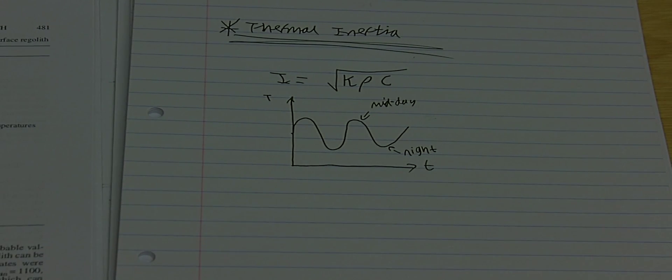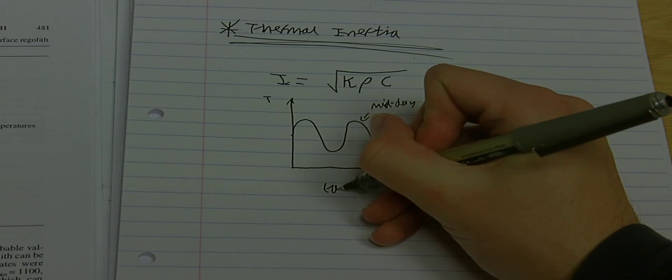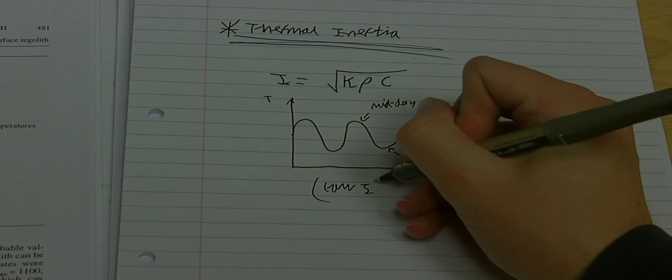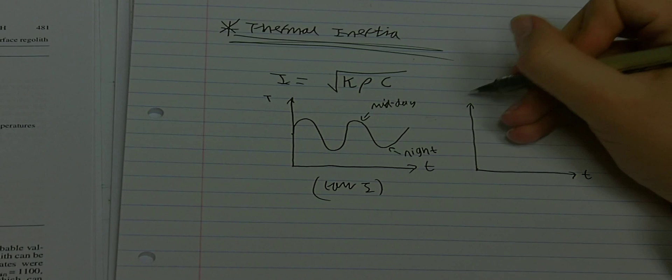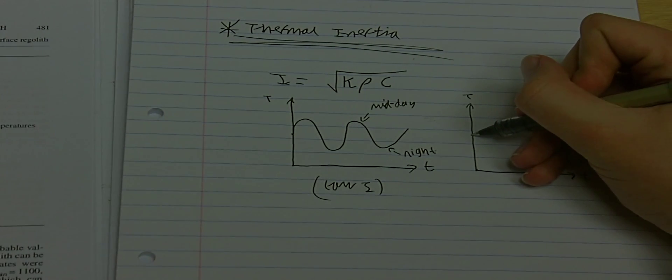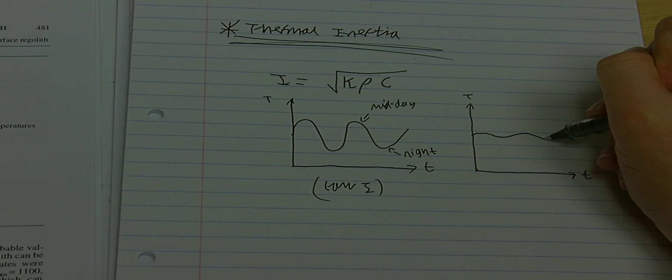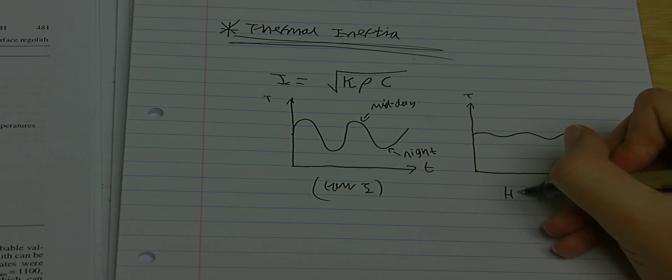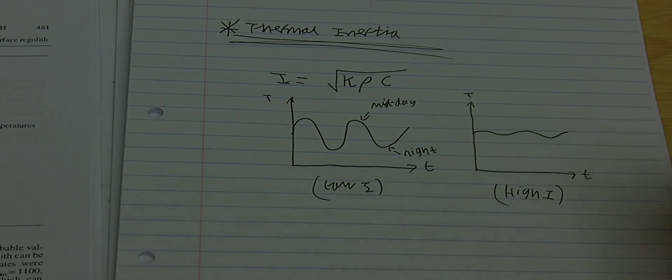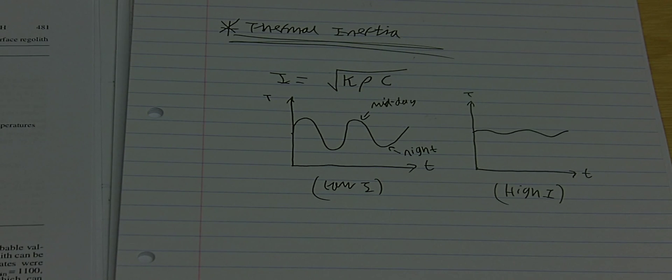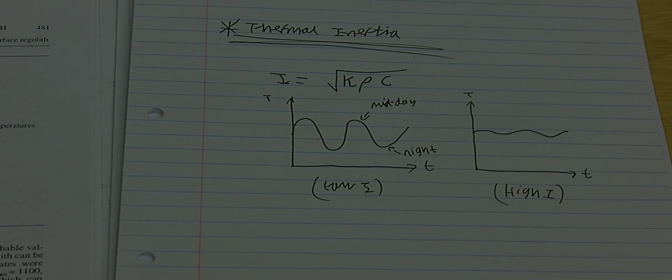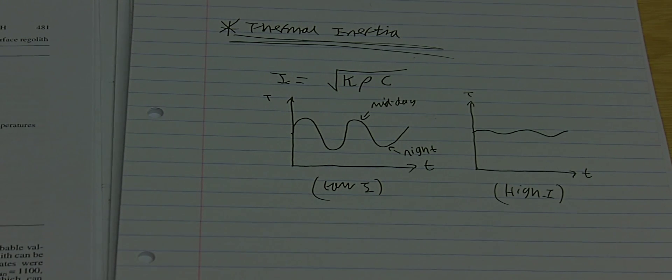However, if the thermal inertia is really high, the temperature hardly varies at all. It's pretty much flat. So what we want to do is understand on Phobos what typical values could we expect for the thermal inertia, because how much the temperature varies will determine what kind of measurements we can do, our signal to noise ratio for our instrument, and ultimately when the best time to do observations are.